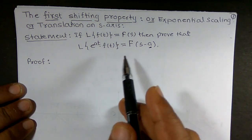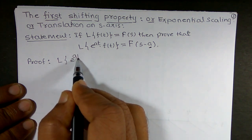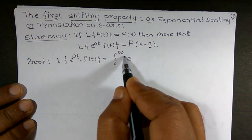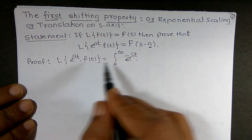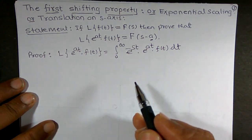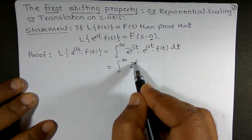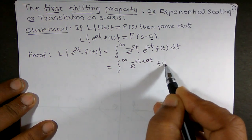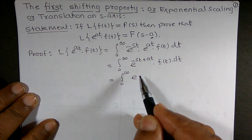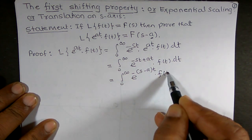Mathematically, how do we prove left-hand side equals right-hand side? By definition of Laplace transform, we can write L{e^(at)·f(t)} as the integral from 0 to infinity of e^(-st) times e^(at) times f(t) dt. We can add the powers: e^((-s+a)t), which gives e^(-(s-a)t) · f(t) dt.